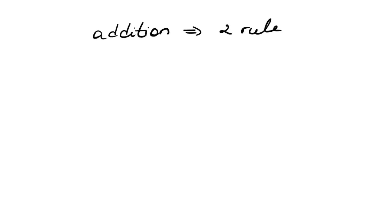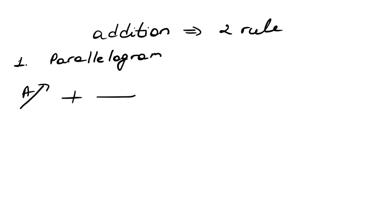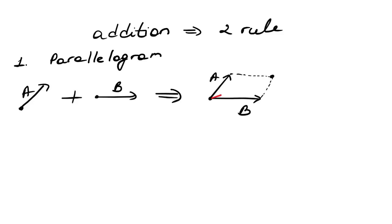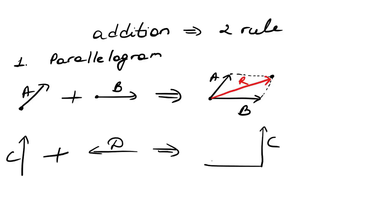Adding vectors is also very easy, and to do that we generally use two rules. The first rule is the parallelogram rule. Here we add two vectors: the first thing we do is connect their tails, then draw a parallel line to each other from their heads, and draw a straight line to their intersection, which will be the resulting vector.